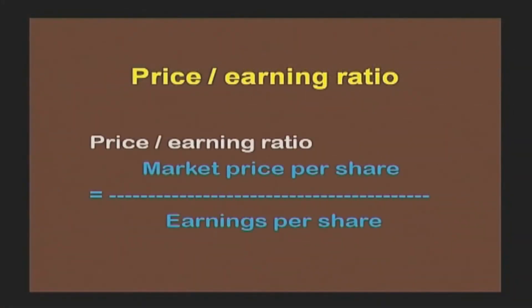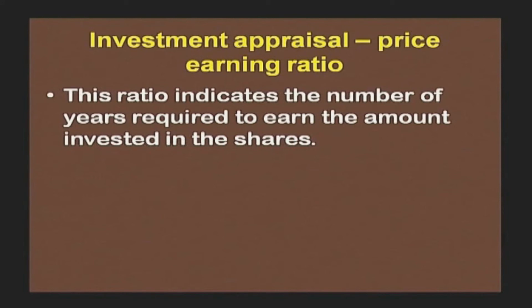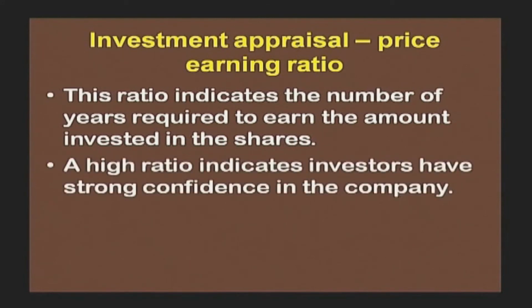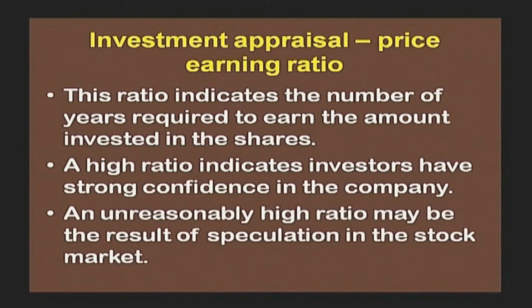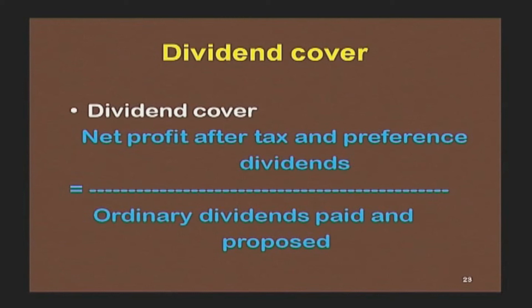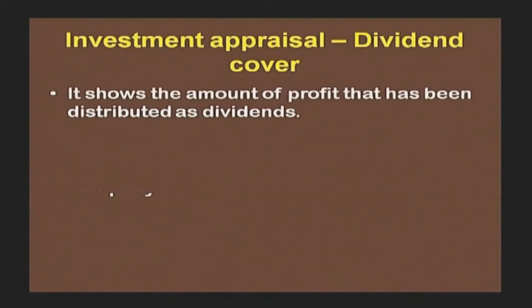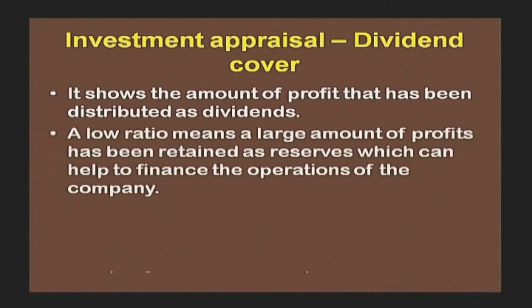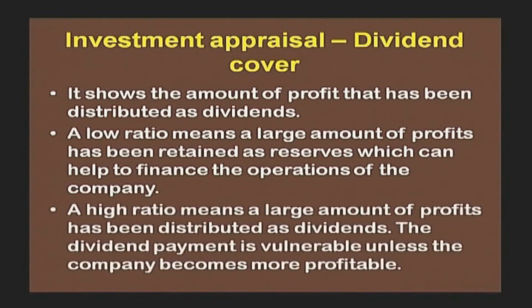Next is the price earnings ratio. Its formula is market price per share divided by earnings per share. This ratio indicates the number of years required to earn the amount invested in the shares. A higher ratio indicates investors have strong confidence in the company, similar to EPS; however, an unreasonably high ratio may be the result of speculation in the stock market. Next is dividend cover, computed as net profit after tax and preference dividend, divided by ordinary dividend paid and proposed. It shows the amount of profit distributed as dividend. A low ratio means a large amount of profits has been retained as reserves, helping to finance operations. A higher ratio means a large amount of profit has been distributed as dividend, and the dividend payment is vulnerable unless the company becomes more profitable.